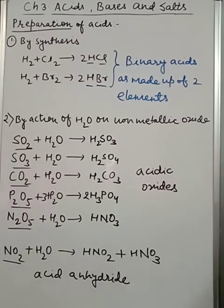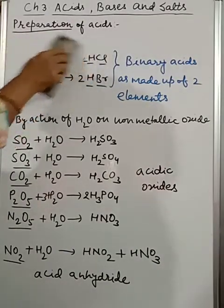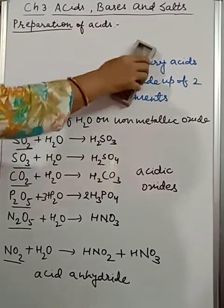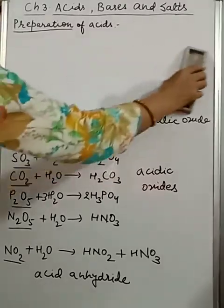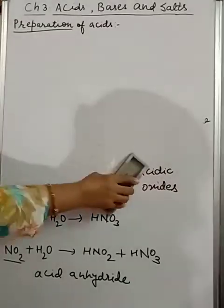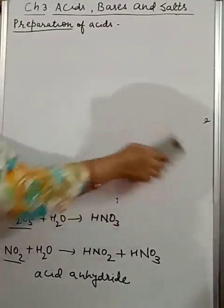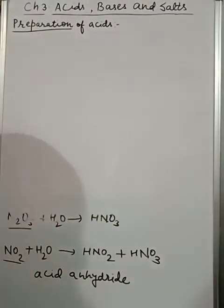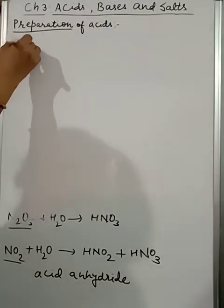Now we are going to discuss the third point: by oxidation of non-metals. As you can understand, the meaning is given by oxidation, so for this we are going to take a strongly oxidizing agent, that is HNO3. So we are going to take sulfur and phosphorus with nitric acid.